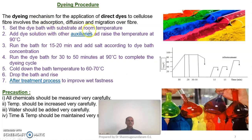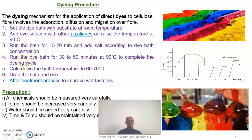Set the dye bath with substrate at room temperature. Then add dye solution with the necessary auxiliaries and raise the temperature to 90°C. Run the bath for about 15 to 20 minutes and add salt according to the dye bath concentration. Run the dye bath for about 30 to 50 minutes at 90°C to complete the dyeing cycle. Cool down the bath temperature to 60–70°C, then drop the bath and rinse with hot water as well as cold water. Finally, after-treatment has to be carried out to improve the washing fastness and light fastness of the direct dyed material.